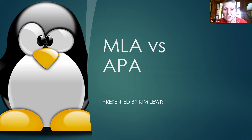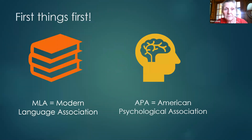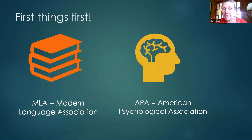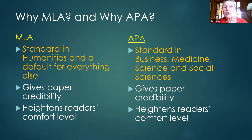MLA stands for Modern Language Association and APA stands for American Psychological Association. MLA is the oldest by a lot — it's over 100 years old. APA has been around a while but it's only been in the citation business for about 30 years.